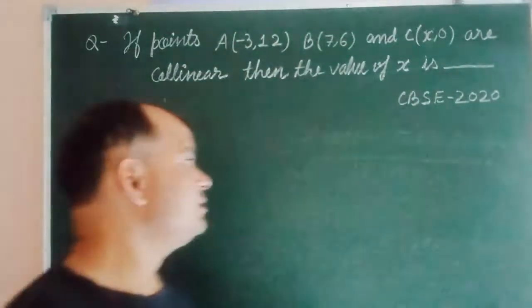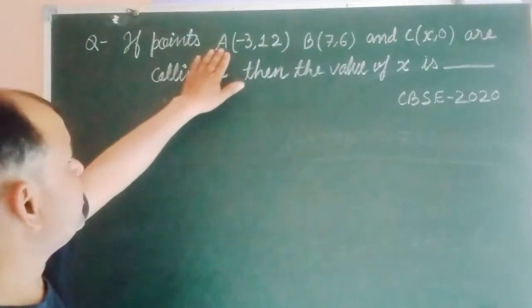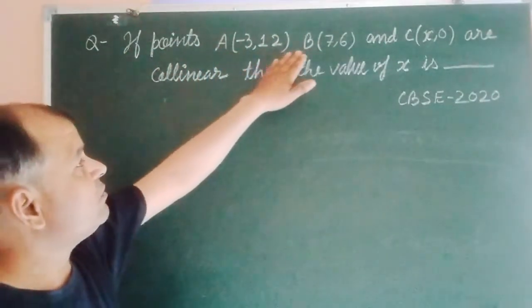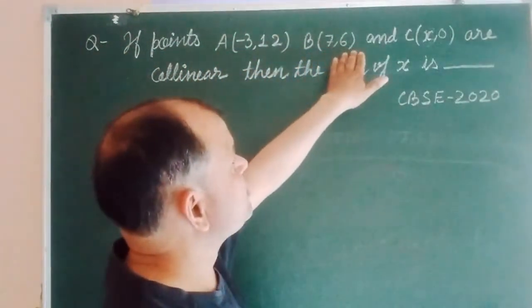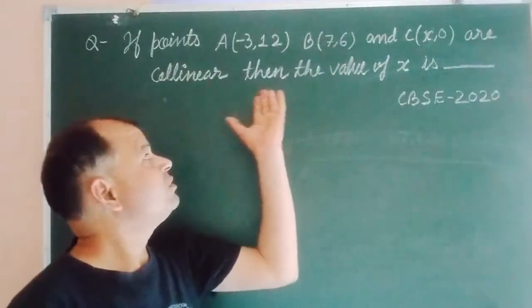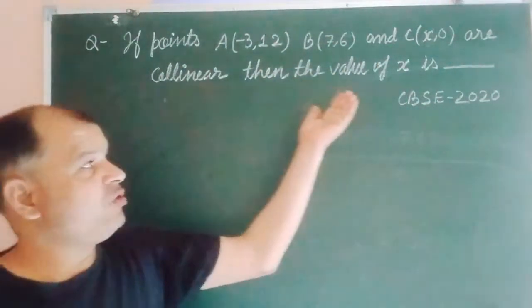The problem is: if points A(-3,12), B(7,6) and C(x,0) are collinear, then the value of x.